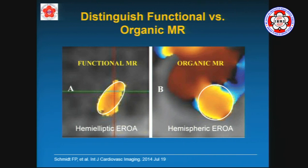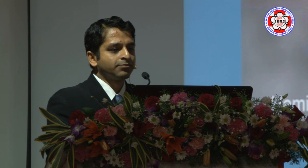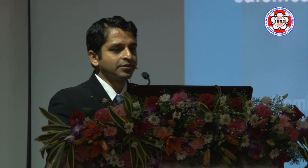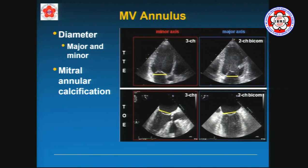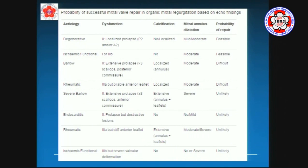With 3D echo, you can actually distinguish functional versus organic MR. Organic is what we call primary MR; secondary or functional MR is the other term. Typically, if you look at the orifice in cross-section, it looks like an O for organic. And if it's elliptical, then it's typically more functional mitral regurgitation — so it's easy to distinguish. We tell you about the annulus, the annular diameters measured in two different views — the long and short major and minor diameters — and we tell you about mitral annular calcification. For the cardiologists in the audience, remember that we measure this at end systole.